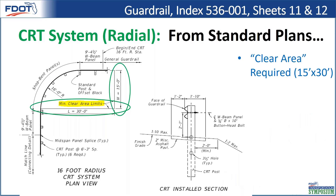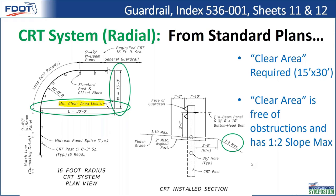Here's how the standard looks — you can see the clearly defined clear area limits and all the breakaway posts along the radius. These are what standard guardrail posts look like. You want to leave that clear 15 by 30 feet free of above-ground obstructions. You can have a slope of up to 1 to 2 max even in the clear area, but the important thing is to avoid any above-ground obstructions.